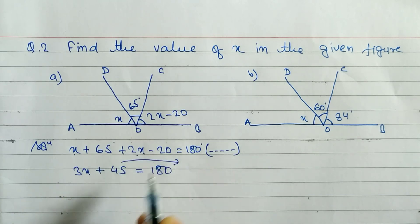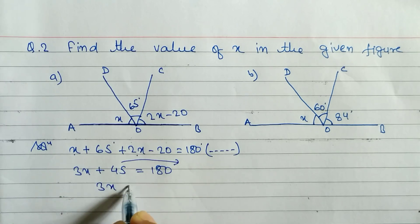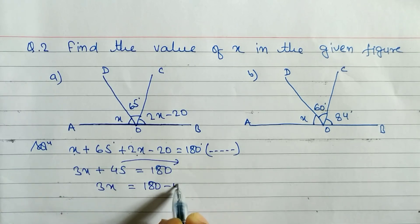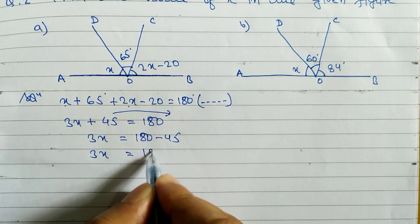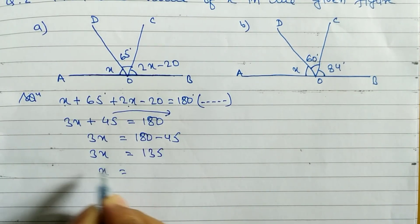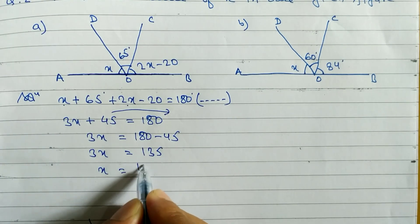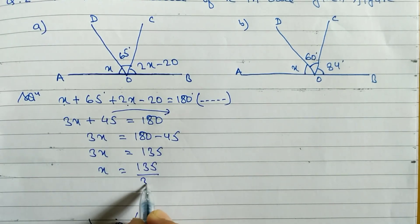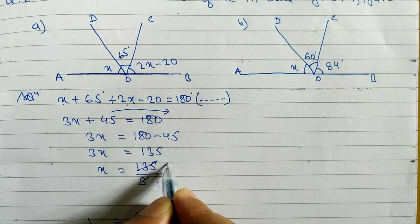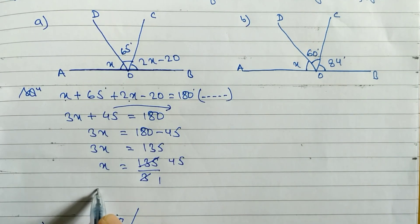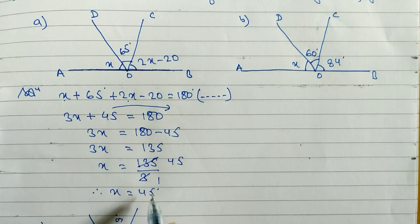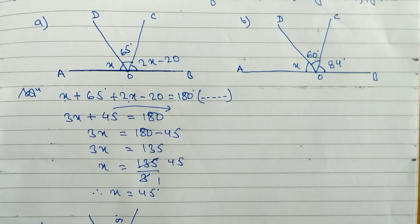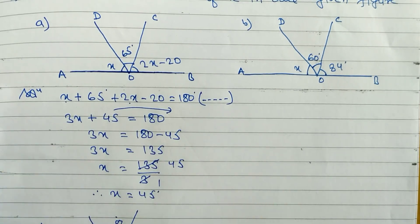These two are unlike terms, so we take 45 to the right side. We can write: 3x is equal to 180 minus 45, so 3x equals 135. Therefore x is equal to 135 divided by 3. Since 3 times 45 is 135, the value of x is equal to 45 degrees. Hope you understand question 2a.